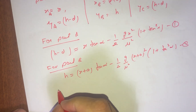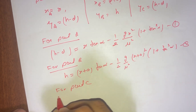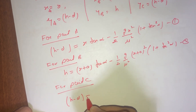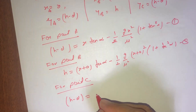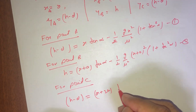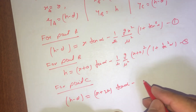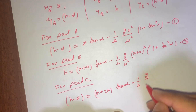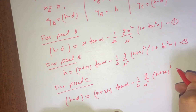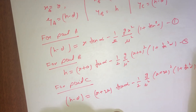For point C we write: h − d = (x + 2a)·tan(α) − (g·(x + 2a)²·(1 + tan²α))/(2u²) — call this equation 3.